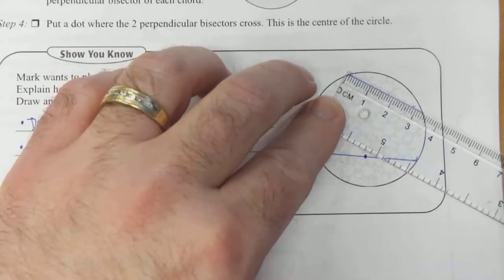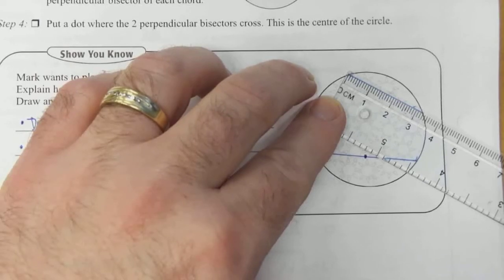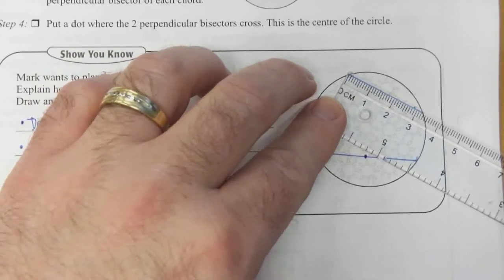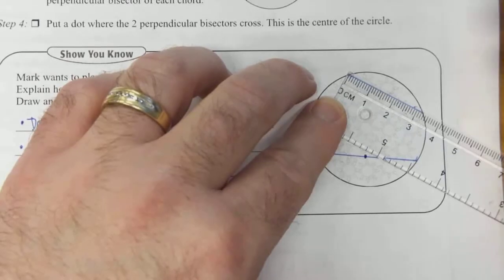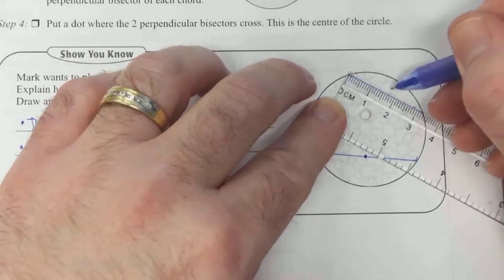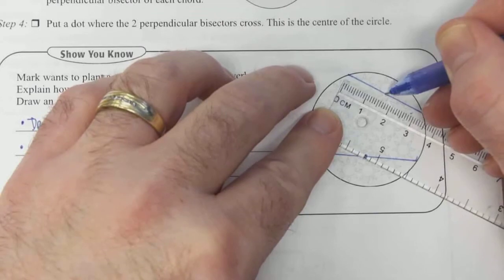This one is 3.3-ish. Yeah, 3.3, so 1.65 or so will be its midpoint.